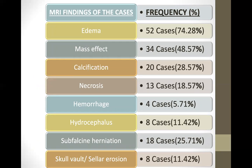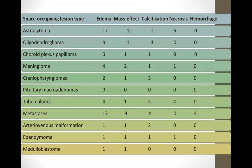The predominant MRI finding in all of these patients was edema, followed by mass effect and then calcification. Aggressive tumors like astrocytoma would cause all effects — edema, mass effect, calcification, and necrosis. Hemorrhage was found only in metastasis in my study.